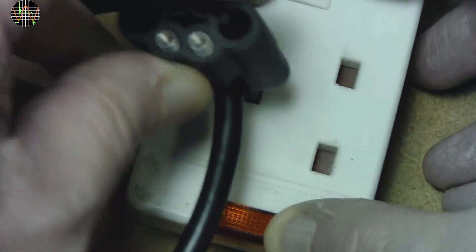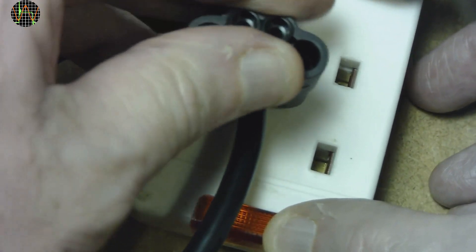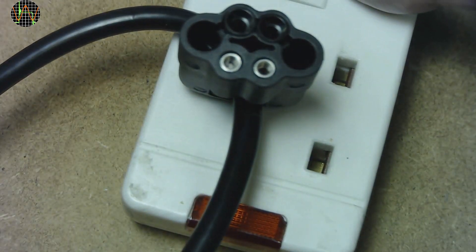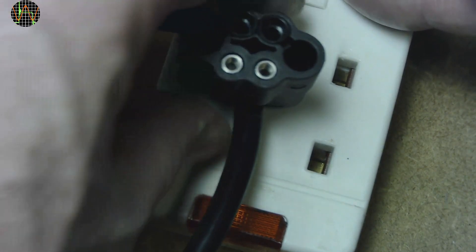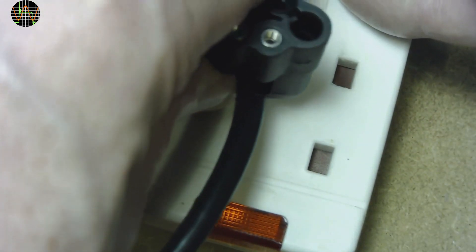The last function is to open the safety shutter in UK sockets. As you can see, when you push the opener at the top of the cap into the place where the earth pin of the plug would go, the shutters withdraw and live and neutral can now be probed.